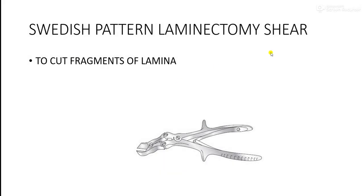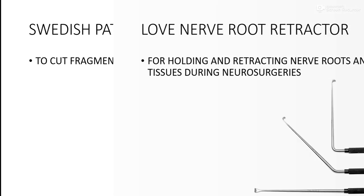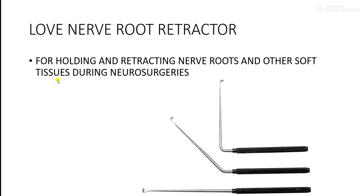The Swedish pattern laminectomy shear, as the name suggests, is used to cut fragments of lamina during the laminectomy procedure. Next is the Love nerve root retractor, used for holding and retracting nerve roots and other soft tissues during neurosurgery. Using typical retractors with sharp ends could injure nearby nerve roots, which can cause further problems such as paralysis, paraplegia, or paresthesia.